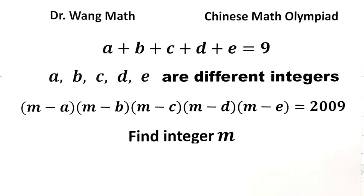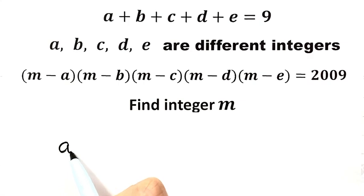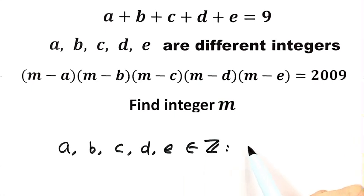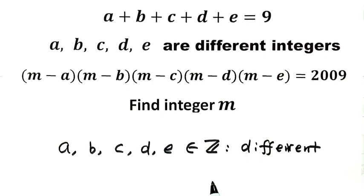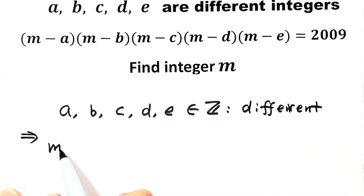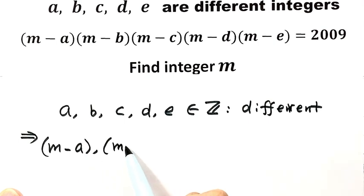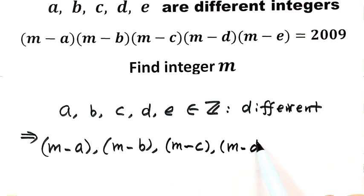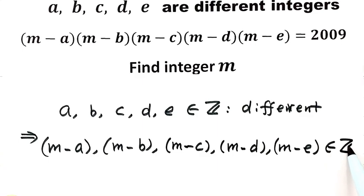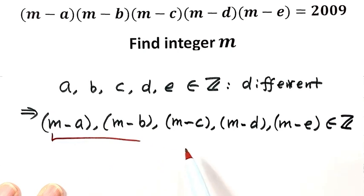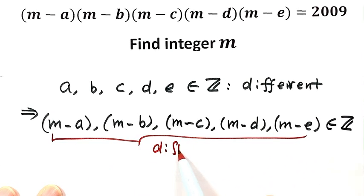Now let's see how to solve this equation. Because a, b, c, d, e are all integers and they are different, and because m is also an integer, that means each part — m minus a, m minus b, m minus c, m minus d, m minus e — they are also integers, and they are different.